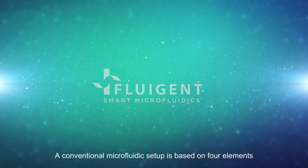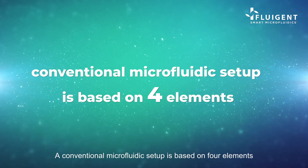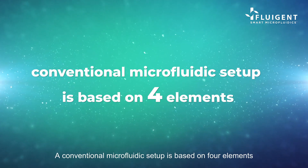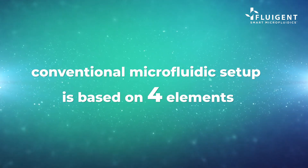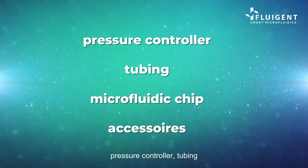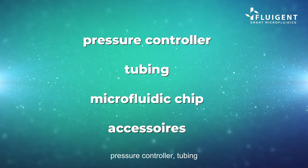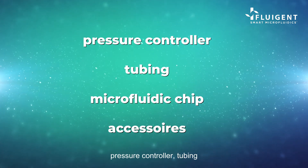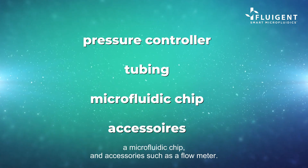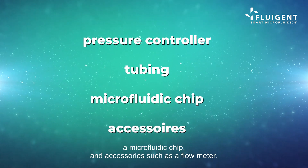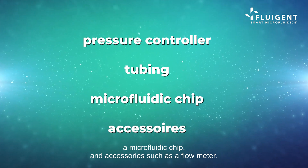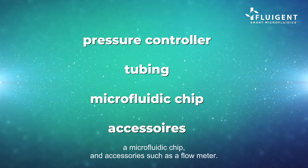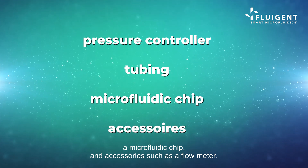A conventional microfluidic setup is based on four elements: a pressure controller, tubing, a microfluidic chip, and accessories such as a flow meter.